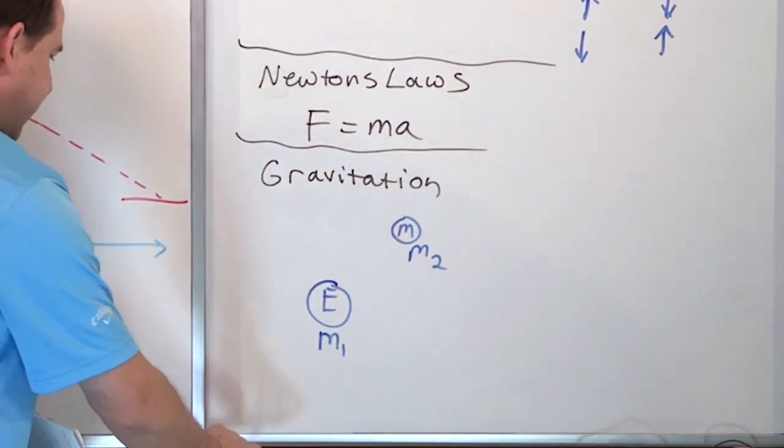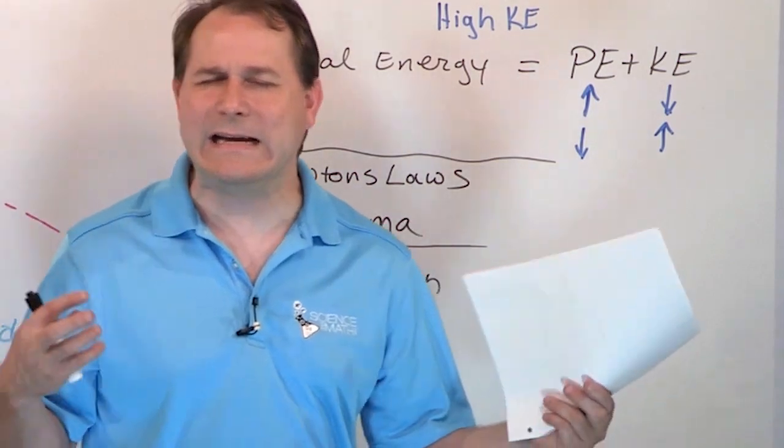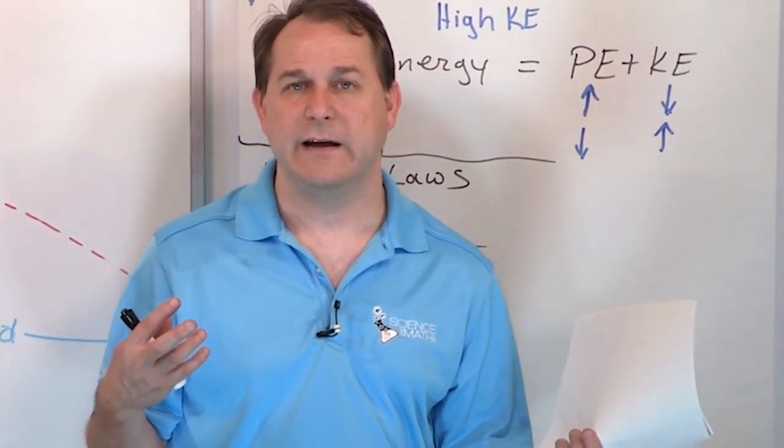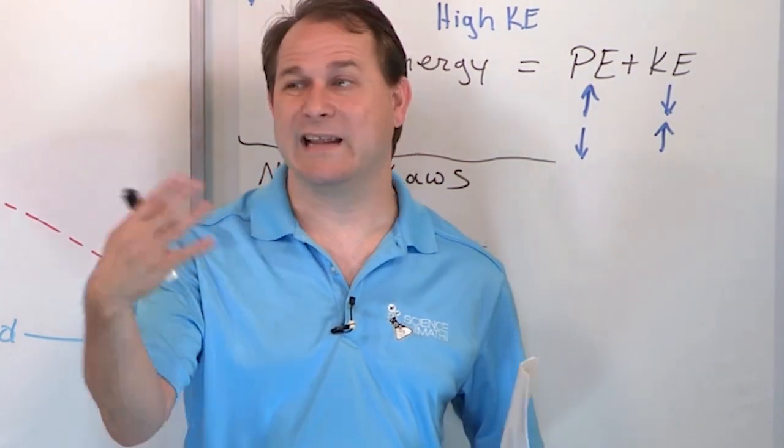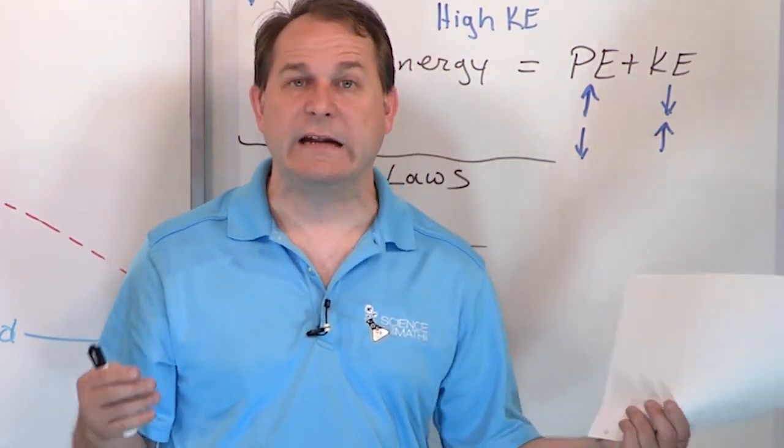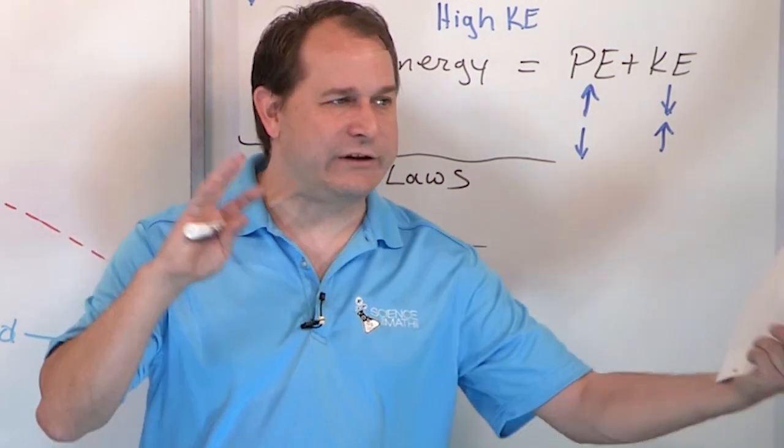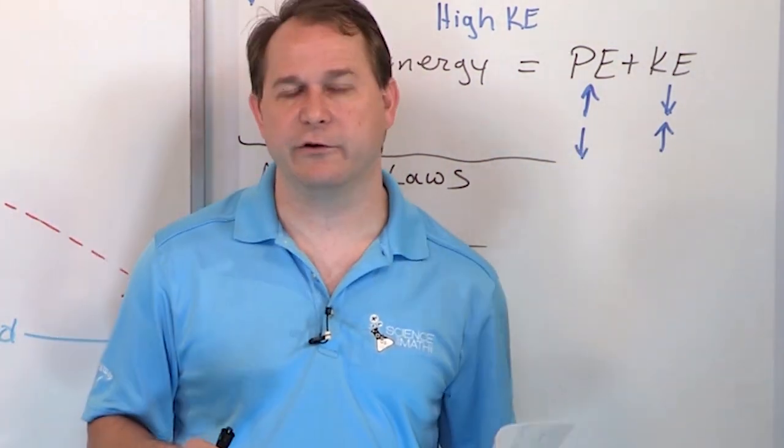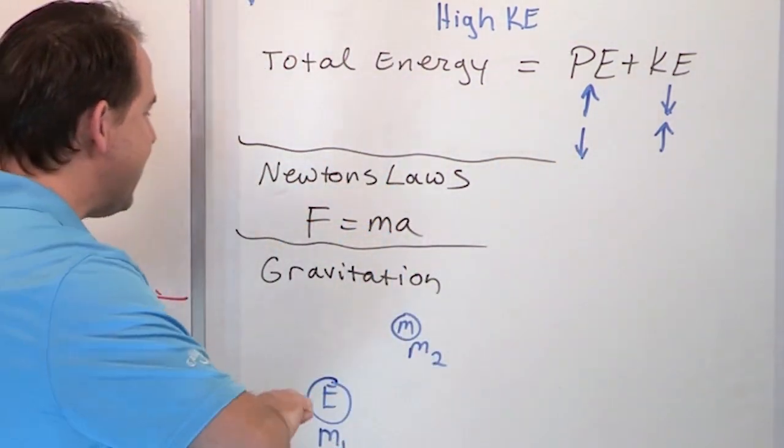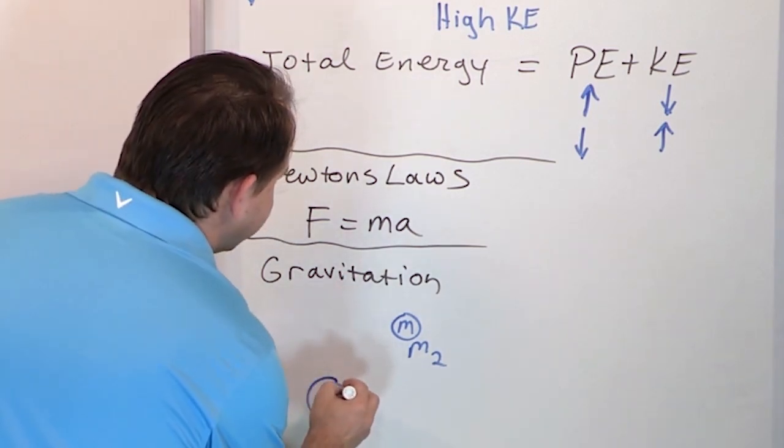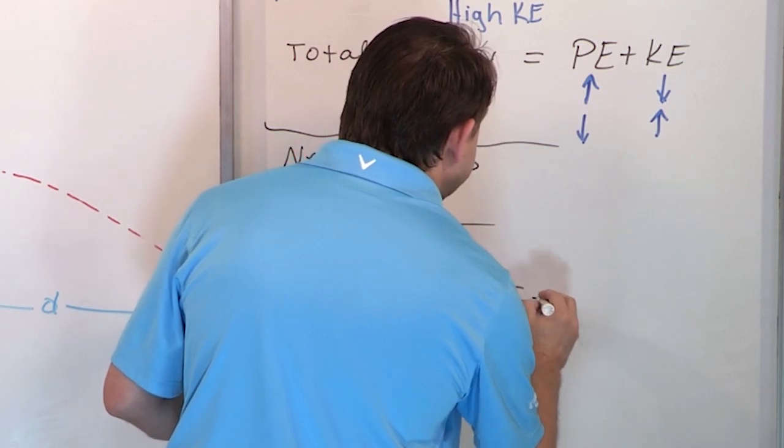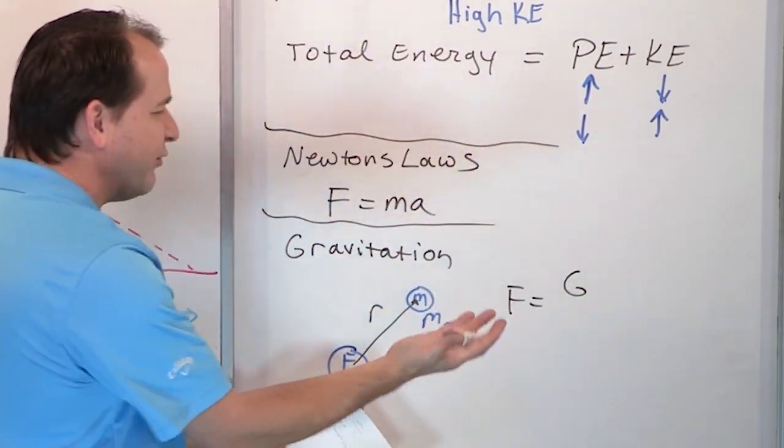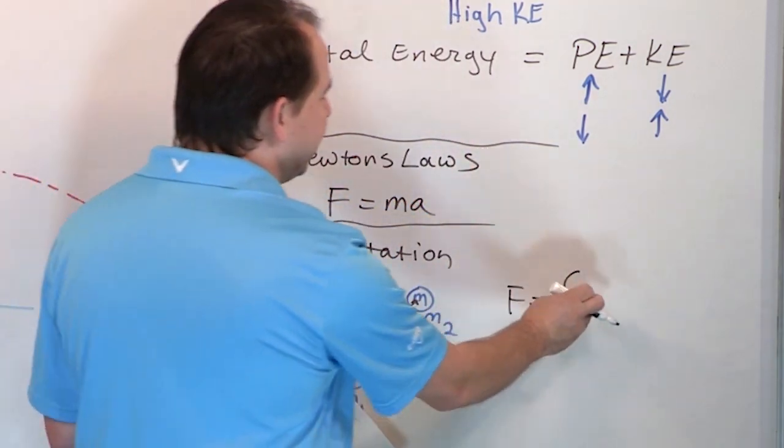What Newton figured out is there's a force that exists between any two pieces of matter. It exists between you and your pencil. It exists between a lamp and television. It exists between the earth and the moon. Any two pieces of matter pull on each other with some force of gravity and that force, if the distance between these two things we call R, that force of gravity is equal to some number G, which we'll talk about. It's called the gravitational constant.